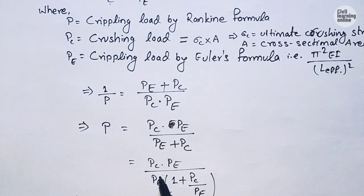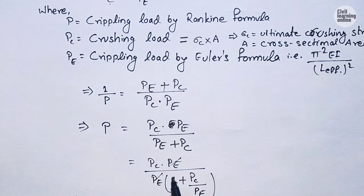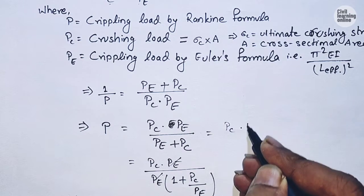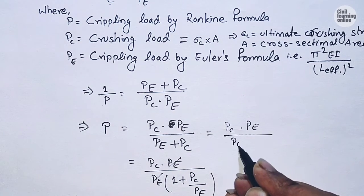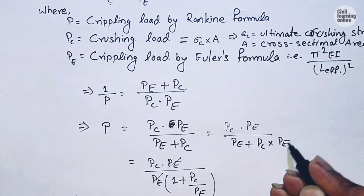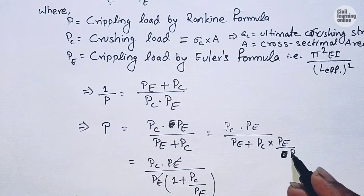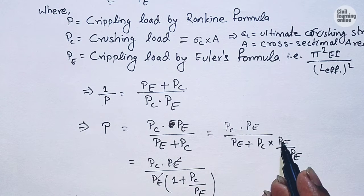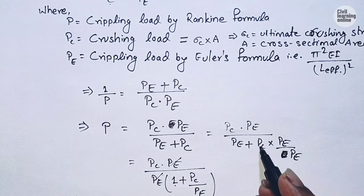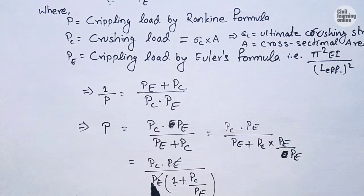Taking PE common, the PE terms cancel, giving P = PC divided by (1 + PC/PE).